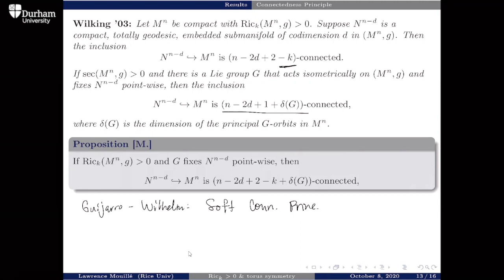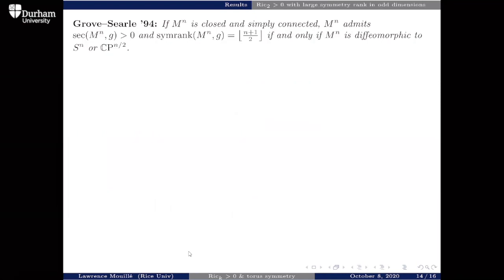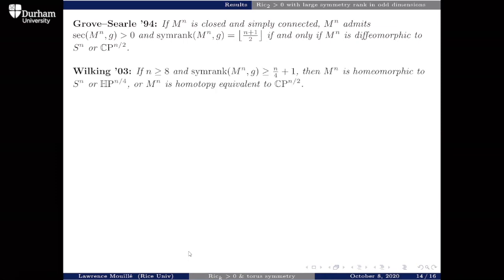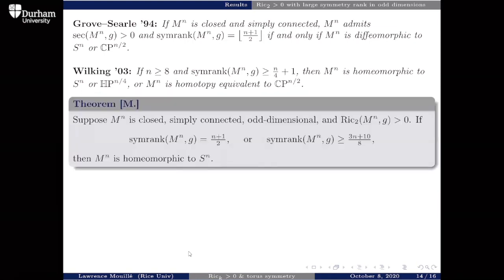So we have this tool. Grove and Searle showed that if symmetry rank is roughly half the dimension, the manifold is diffeomorphic to a sphere or complex projective space (if simply connected). Wilking showed that if symmetry rank is roughly a fourth of the dimension, you can add quaternionic projective space. In odd dimensions, I've managed to show that if you have Ric_2 positive — the next weakest intermediate Ricci curvature after sectional curvature — and you have symmetry rank roughly three-eighths of the dimension or maximal symmetry rank, then the manifold must be homeomorphic to a sphere.